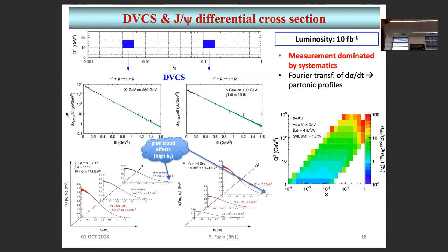A key point is that we are really challenged by systematics at the EIC. Considering 5% systematics and scaling down the benchmark luminosity to 4 inverse femtobarn, the ratio of statistical uncertainty over total uncertainty stays below 1% for most bins and only reaches 10% at very high Q-squared near 100 GeV-squared. You really have to go to extreme Q-squared to be statistically limited. This is why controlling systematics at the EIC is critically important — changing from 5% to 4% or 2% systematics will change the game entirely.